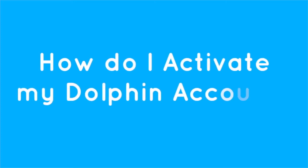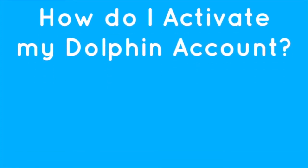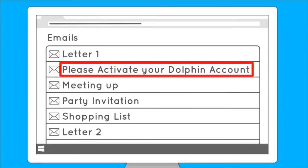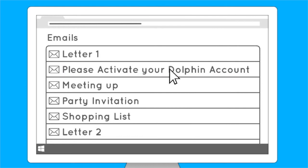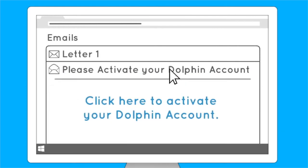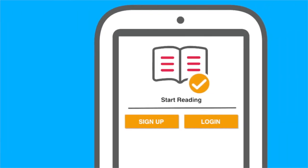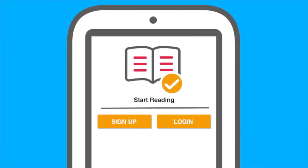How do I activate my Dolphin account? Once you have signed up for your account, Dolphin will automatically send you an email with the link to activate your Dolphin account. Open the email and then click on the activation link. Go back to the EasyReader app and log in with your email and password and you'll be free to start reading.